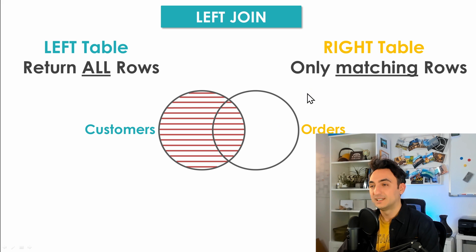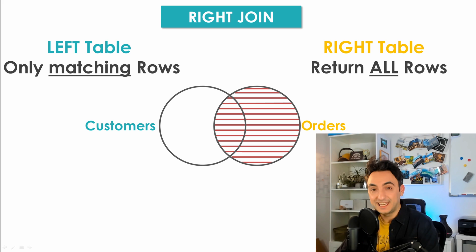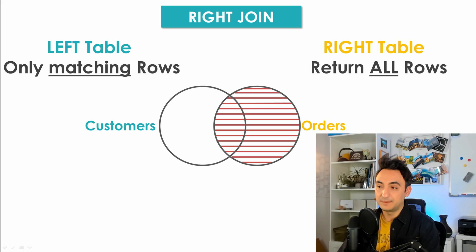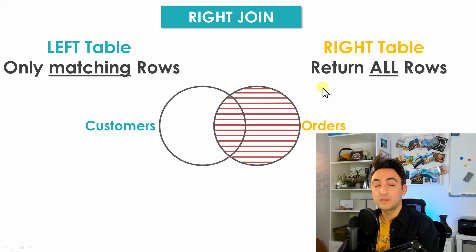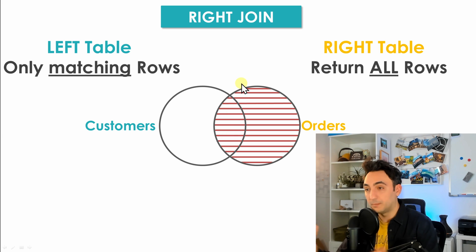The right join is exactly the opposite of the left join. When you write right join in your script, you are depending completely on the right table. The SQL will present all the records from the right table in the results, and from the left table only the matching rows — the exact reverse of the left join.